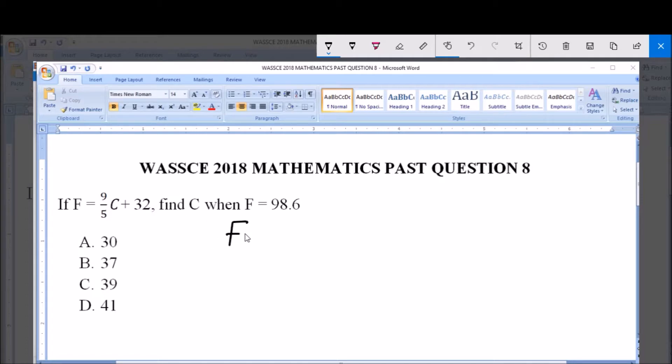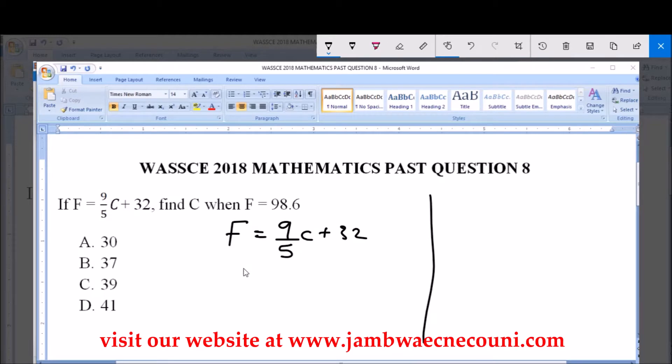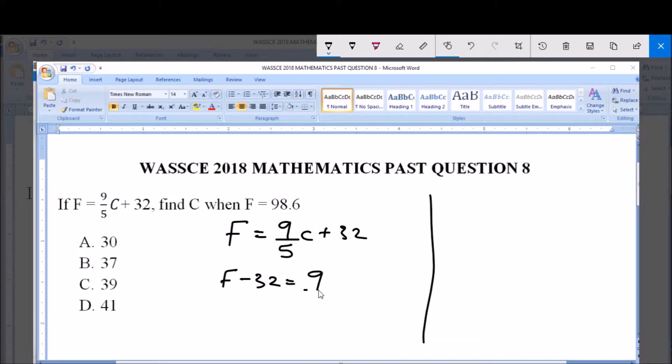Now it is given that F equals 9/5 C plus 32. From this we can say that F minus 32 is equal to 9/5 C.